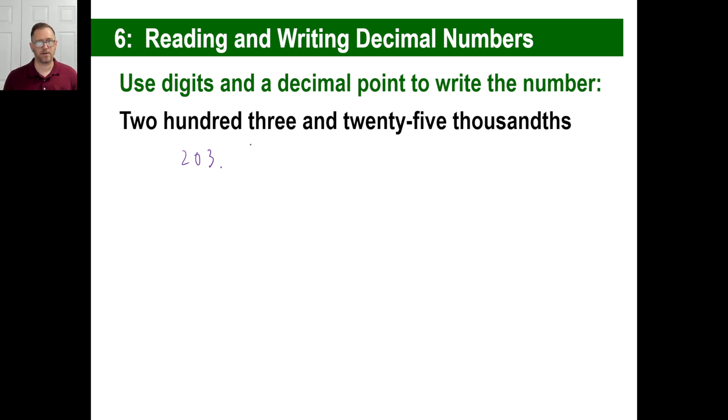Now 25 thousandths is slightly tricky if you haven't done these before. You might be tempted to go, oh, 25, got it. But if you read that off, you've got to notice that that's a tenths and then 10 times 10, hundredths. So that's actually 25 hundredths. You don't want that.